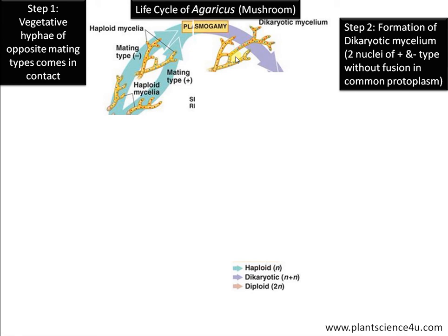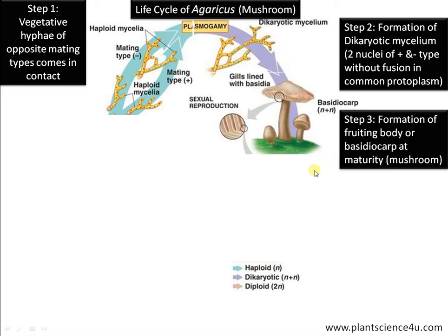The dicharyotic mycelium divides continuously, forming an extensive mass of hyphae just below the soil. Step 3: at maturity, these hyphae form upright structures called fruiting bodies, known as basidiocarp — we call it a mushroom. The stalk is called the stipe.